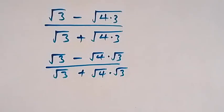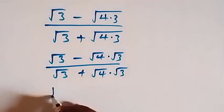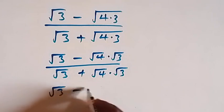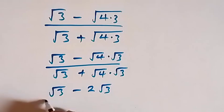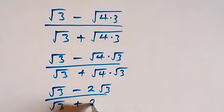Then from here, √4 is 2, so we have √3 minus 2√3, over √3 plus 2√3.